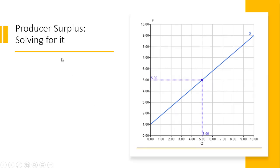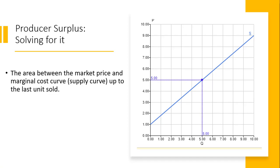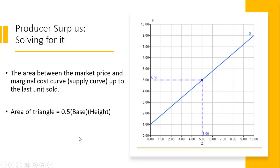Let's now solve for producer surplus to get a numerical answer. It's just going to be the area of this triangle. The area of a triangle is one half base times height. The base is 5 minus 1, which equals 4, and the height is 5 minus 0, which is 5. Plugging into the formula: one half times 4 times 5 gives us 20, and half of that is $10. So producer surplus in this example is $10.